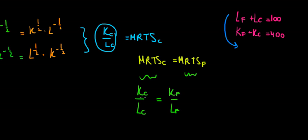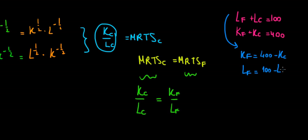If we want to write capital of food in terms of capital of clothing, that's going to be: K_F = 400 minus K_C. And the same logic goes for labor: if we write labor in food as a function of labor in clothing, that would be L_F = 100 minus L_C.